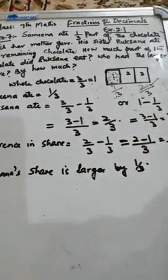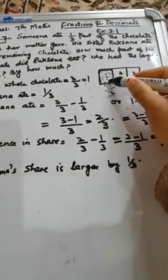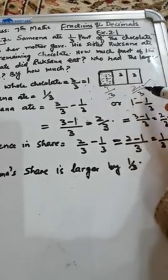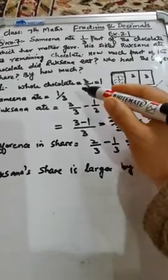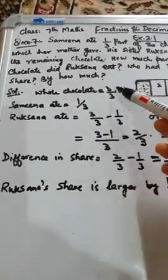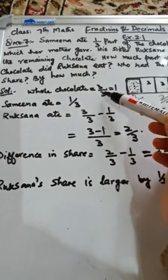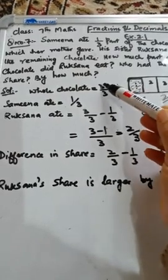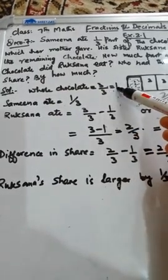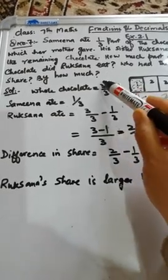Who had the largest share? By how much? The first question is about the larger share. So let's do this: the whole chocolate is represented as 3 upon 3. 3 cancel — that is equal to 1. So the whole chocolate is 1, represented by the number 1. 3 upon 3 equals 1.